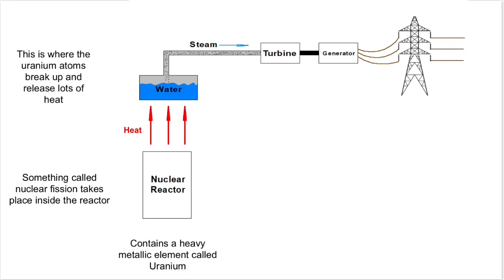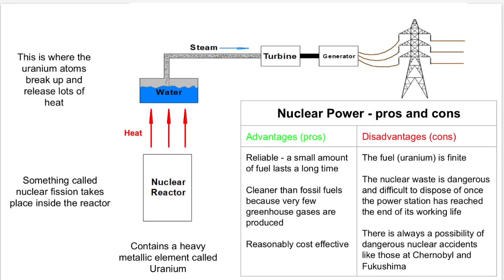The steam turns a turbine, the turbine turns a generator, and the electricity is fed into the national grid. And just as with the other types of energy that we've looked at, nuclear power does have advantages and disadvantages. You can read these for yourselves.